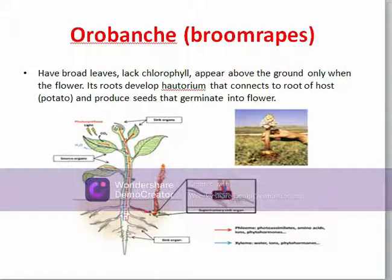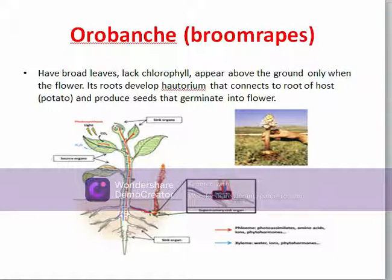Orobanche, or broom rape, has broad leaves and lacks chlorophyll. It appears above the ground only when it flowers. It develops haustoria that connect to the roots of the host — for example, a potato plant — and produces seeds that germinate into new plants.